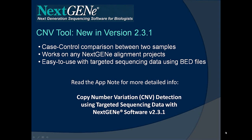The CNV tool is new to NexGene in version 2.3.1. It works on a case-control comparison between two samples, and those samples can be any NexGene alignment projects — there's no special processing needed ahead of time. The more similar those projects are in terms of experimental conditions, the better, in order to reduce the amount of variance that can occur.